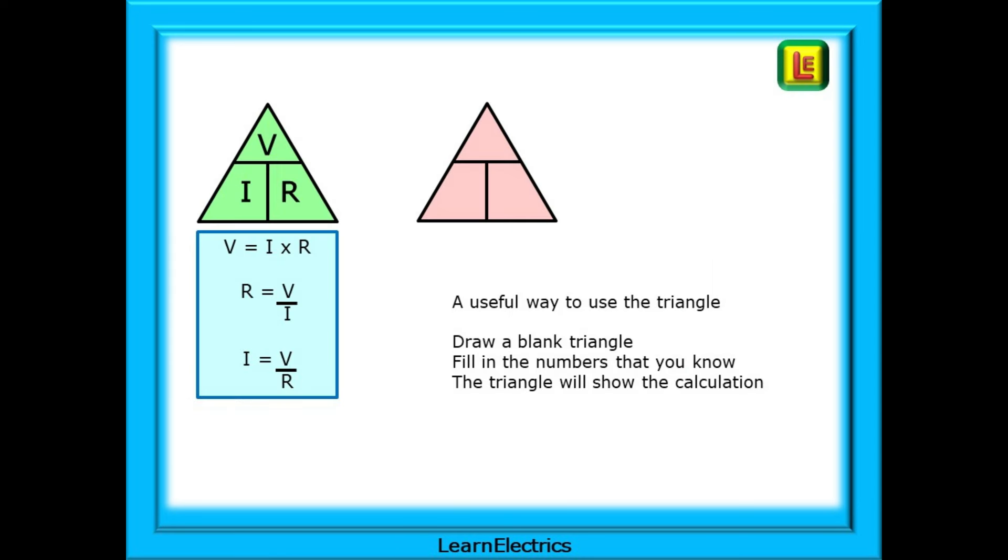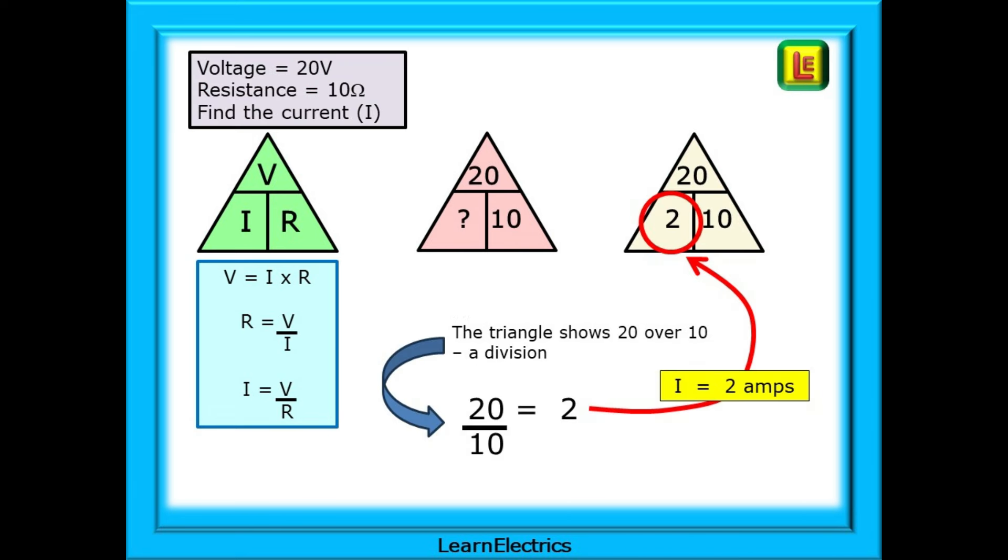A useful method that I often use is to draw a blank triangle as shown. Then fill in the numbers that you already know from the question, and the triangle will show you which calculation to make. We are told that the voltage is 20 volts and the resistance is 10 ohms. We are asked to find the current I. Draw an empty triangle and fill in what we know, 20 and 10 in this case. The pink triangle is showing 20 over 10. This is the calculation that we should do, a division operation. This results in an answer of 2 amps. Check your answer. 2 multiplied by 10 on the bottom row is 20, the same as the number on the top row.